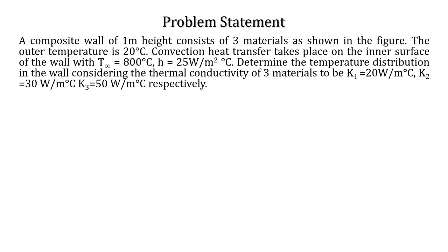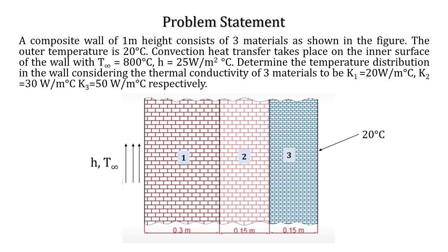Coming to the problem statement: there is a composite wall of one meter height which consists of three materials as illustrated in the figure. The outer temperature is 20 degrees Celsius, and convection heat transfer takes place on the inner surface of the wall with a bulk temperature of 800 degrees Celsius and a heat transfer coefficient of 25 watts per meter squared degree Celsius. We need to determine the temperature distribution in the wall, considering the thermal conductivities of the three different materials to be 20, 30, and 50 watts per meter degree Celsius respectively. There are two modes of heat transfer: convection and conduction.